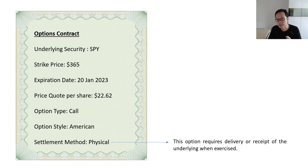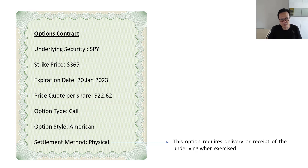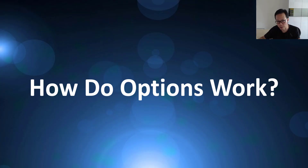Lastly we have the settlement method, which has two types. The first is physical delivery and the second is cash settlement. Most options on stocks require physical delivery — when the option is exercised you either have to deliver the stocks or take receipt of them. Options on indices and index futures are usually cash settled, meaning only the net profit and loss in cash are settled between the buyer and seller.